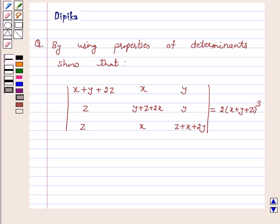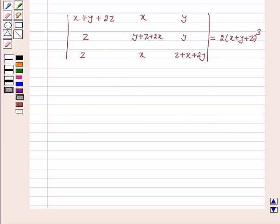Let's start the solution. Let's take the left hand side. Our left hand side is equal to x plus y plus 2z, x, y, z, y plus z plus 2x, x, y, y, z plus x plus 2y.